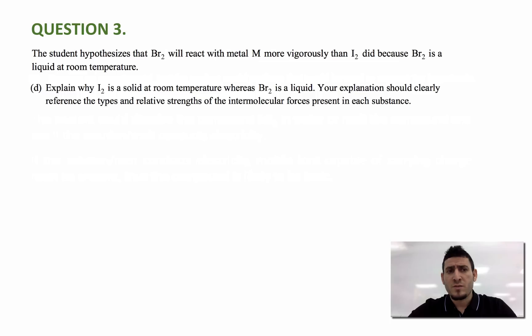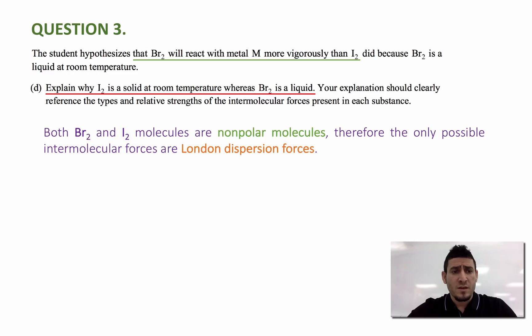The next question says, the student hypothesizes that Br2 will react with metal M more vigorously than I2 did because Br2 is a liquid at room temperature. The question is, explain why I2 is a solid at room temperature, whereas Br2 is a liquid. Your explanation should clearly reference the types and relative strengths of the intermolecular forces present in each substance. The answer is, both Br2 and I2 molecules are nonpolar molecules and therefore the only possible intermolecular interactions within the molecules are London dispersion forces. We know London dispersion forces increase with surface area, or the size of atoms.